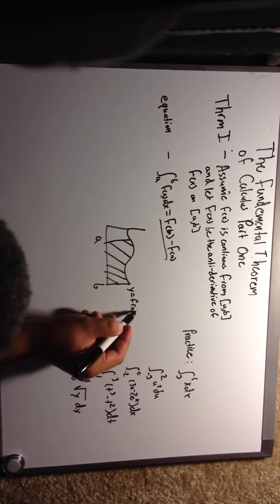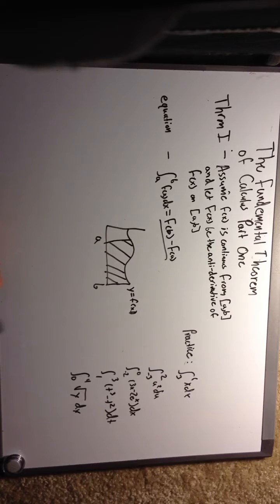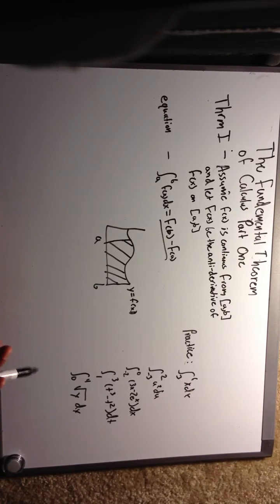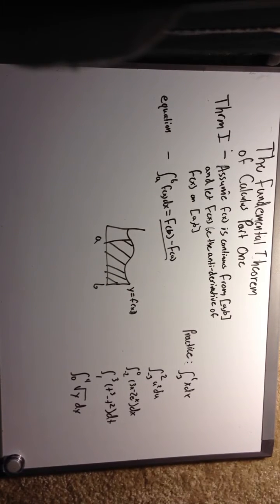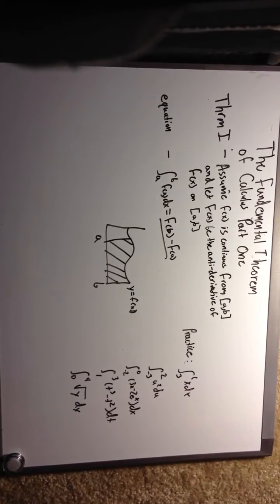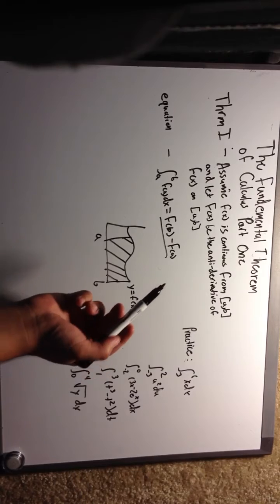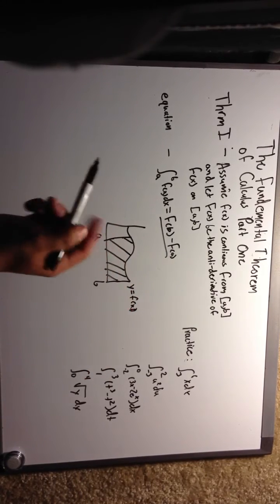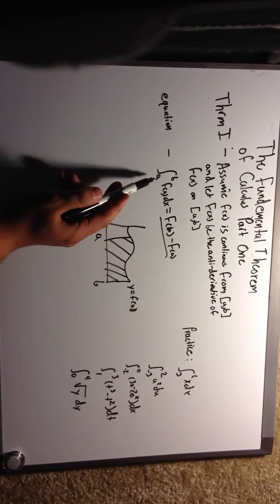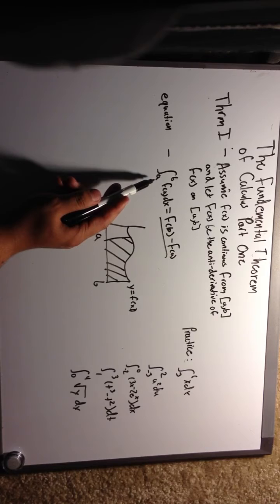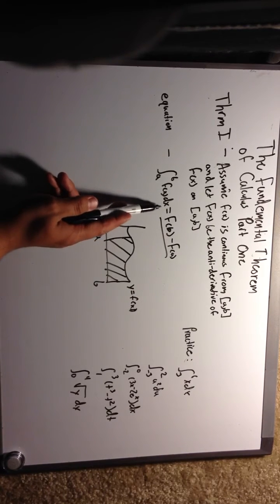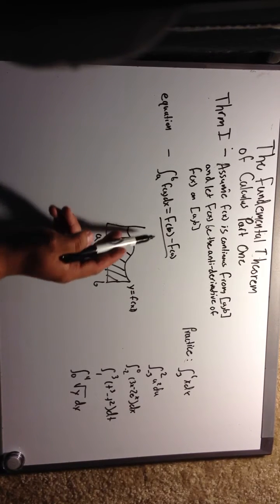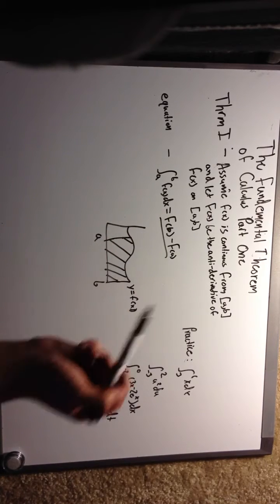That's pretty much what the Fundamental Theorem of Calculus says: if f of x is continuous on the closed interval a to b, and we let capital F of x be the anti-derivative of small f of x on the closed interval a to b, then we can find the definite integral from a to b of f of x dx, which is equal to F of b minus F of a.